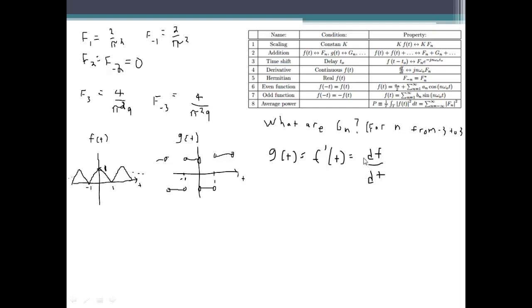So knowing that we can go and look at our table and right here property number 4 is the derivative property. It states that df/dt gets transformed into jn omega naught f_n, so we can write g_n equals jn omega naught f_n. But in this case we remember that our omega naught is pi because our period is 2, so that's just going to equal jn pi times f_n.